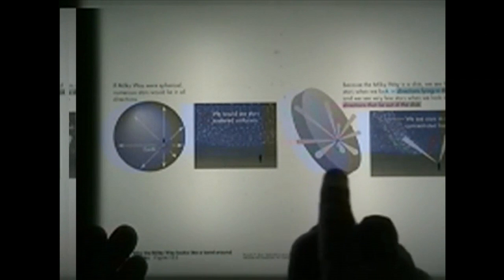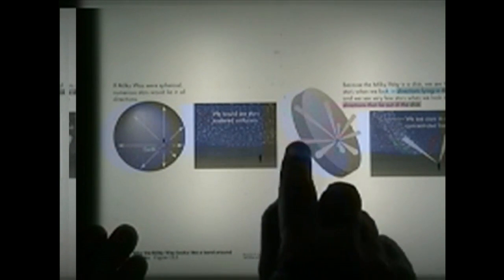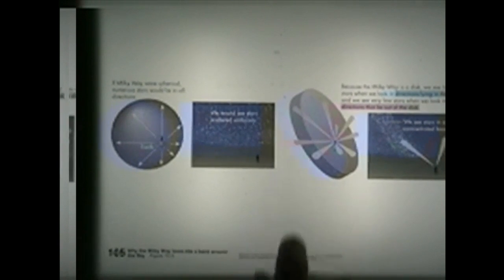The stars would appear to be distributed uniformly across the night sky. But if we live in a disc of stars, then we would see more stars when we view the sky along the plane of the disc. It's just like me viewing you, the stars. If I look along the plane, I see a lot of stars. But if I look out of the plane, I see no stars.